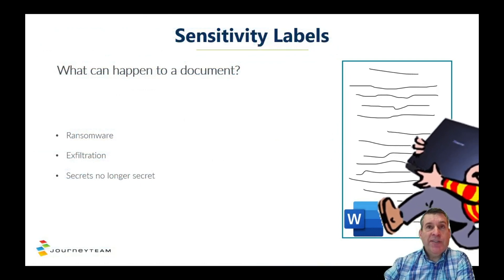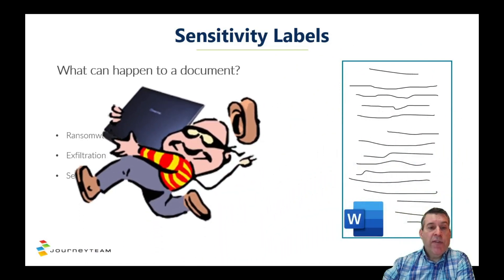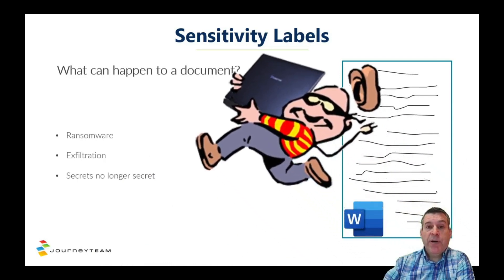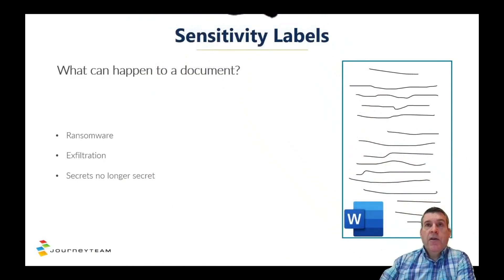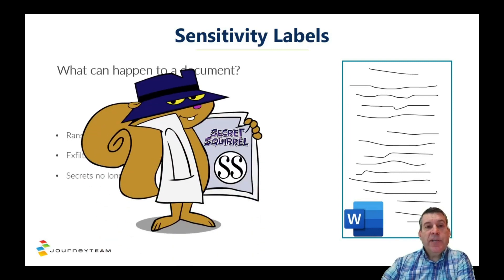The second thing is if you get a bad actor in your network, they're going to run around and look for all the documents that you have that they think might be of value to somebody else — like a competitor, or embarrassing if they were to publish it on the internet. With sensitivity labels, even if they take that document and run away, they can't open it. And because they can't open it, they can't share it with a competitor and they can't publish it on the internet. The last thing is closely related, and that is secrets. Sometimes we have people in our organizations that want to share secrets with other people that they shouldn't. With sensitivity labels, we make it so they can't do that because we have total control over who can do what with our documents.